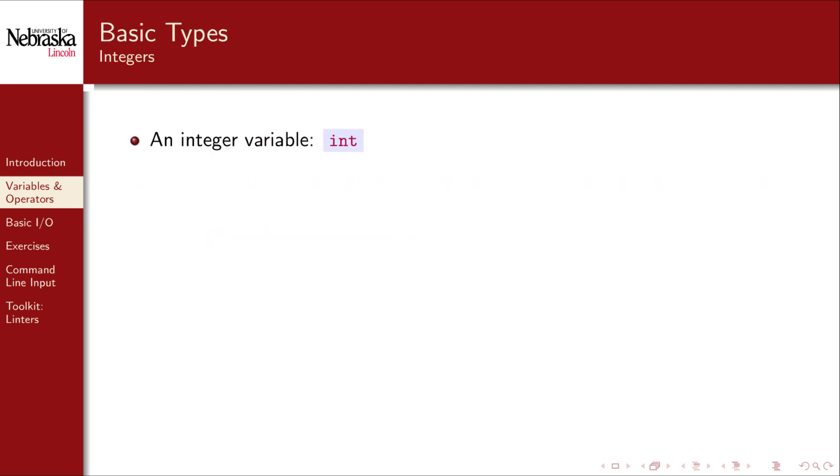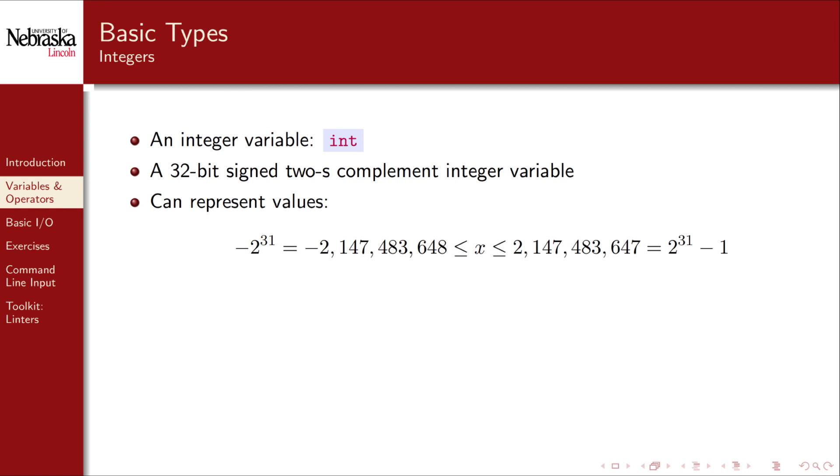An int, short for integer, is one of the three basic variable types that we'll cover initially. An int is a 32-bit signed two's complement integer variable. Again, don't worry about the details of what that means yet, but know that an integer is limited in what it can represent. Specifically, it can represent whole integer values between about negative 2.147 billion and positive 2.147 billion. Here are some examples.